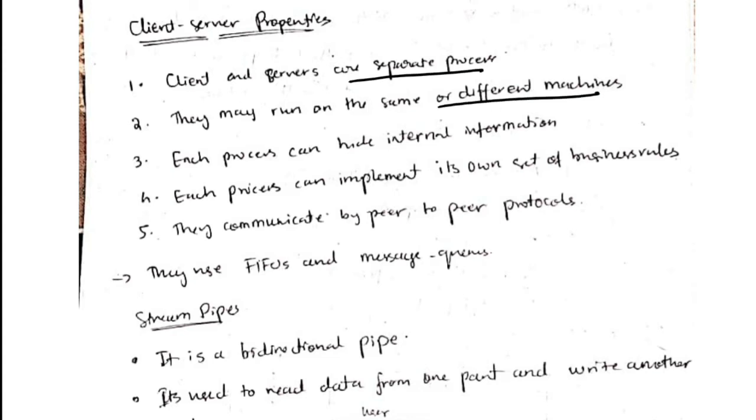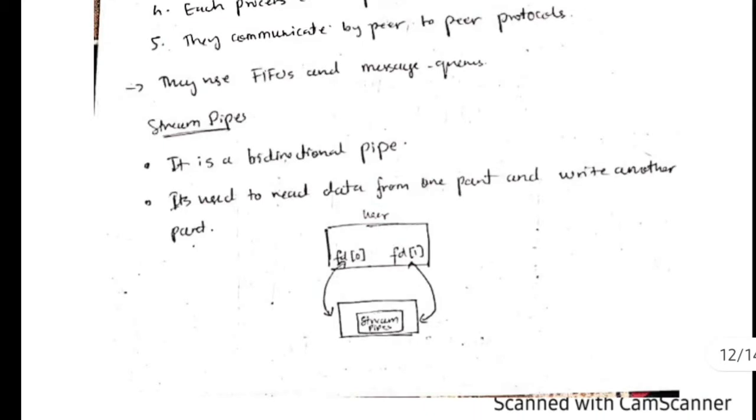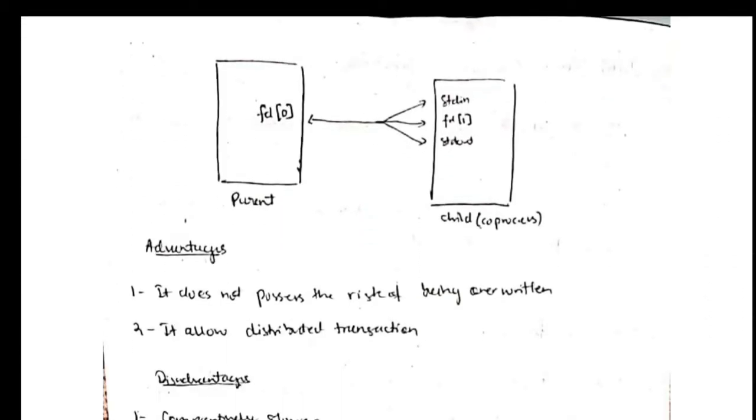Some of the properties of the client-server are that they are separate and they are performed on same or different machines. They have internal information which can be exchanged, and they have their own set of rules and their communication is peer-to-peer. They can use FIFO or message queues. Stream pipes are same as a pipe but it is bi-directional and it's used to read the data from one part and write to another part. If you use for parent to child, we have one incoming and many outgoing processes.